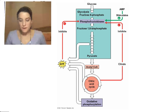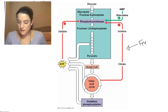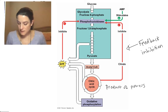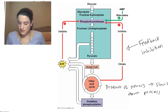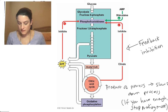This is not a free-for-all — there are regulatory mechanisms in place. A classic mechanism is called feedback inhibition, which is one of the major themes of the course. Feedback inhibition means a product of a process feeds back to slow down that same process. The idea is: if you have enough of something, stop making more. It's more efficient that way.